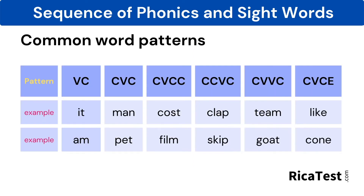Teachers teach common word patterns using this graph. We move from left, which is the utmost simple, to the right, which becomes more complex. Keep in mind that in the pattern row, V stands for vowel, whereas C stands for consonant. Take a moment here to examine and take note of this table.